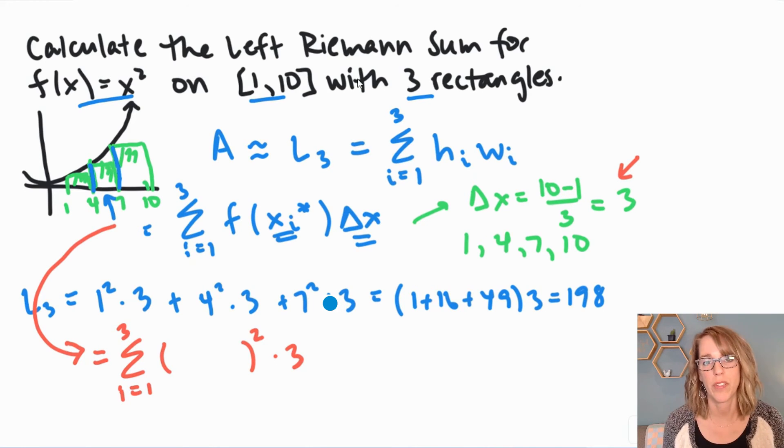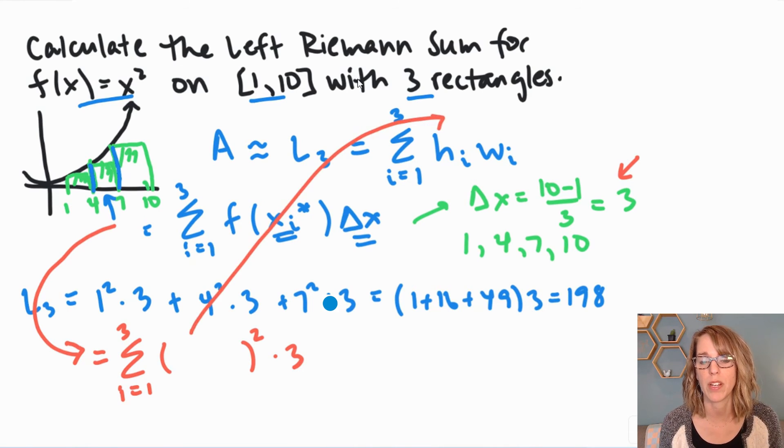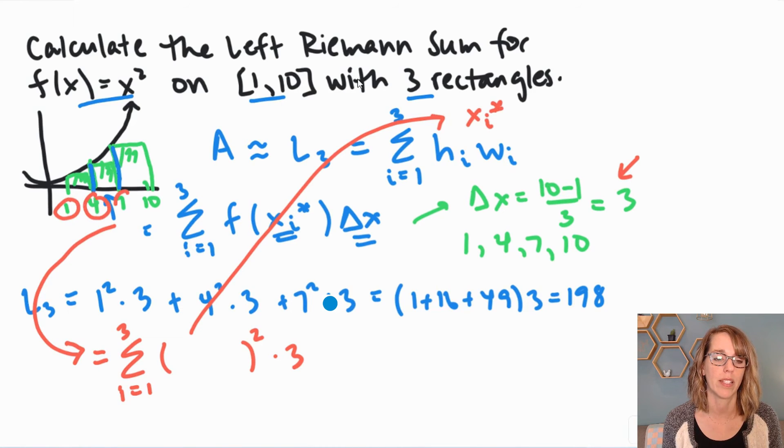Inside those parentheses, I'm going to put x sub i star, which is my sample point. Let's go ahead and do the sample point computation up here in terms of i. So x sub i star. I need to get to the left-hand endpoints: 1, 4, and 7.